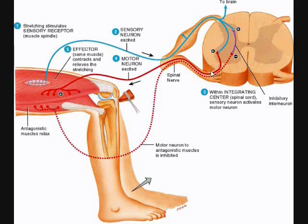That motor neuron will take an impulse and continue it through the ventral horn of gray matter, out the ventral root, out the mixed spinal nerve, and back along that neuron to the same muscle, stimulating it to contract, which will counteract the stretching to protect the muscle from an overstretch.